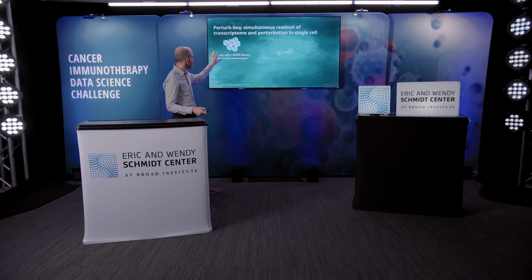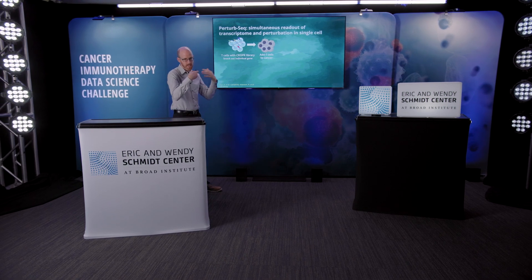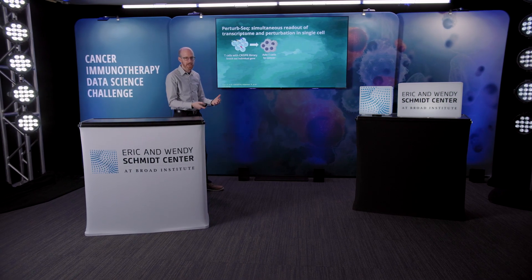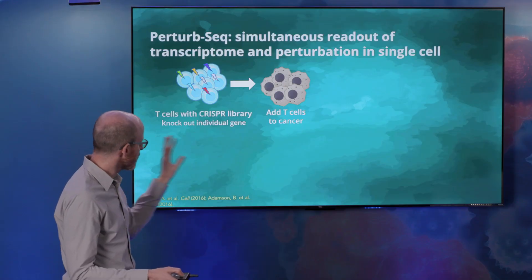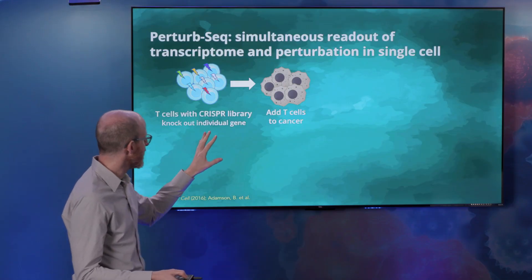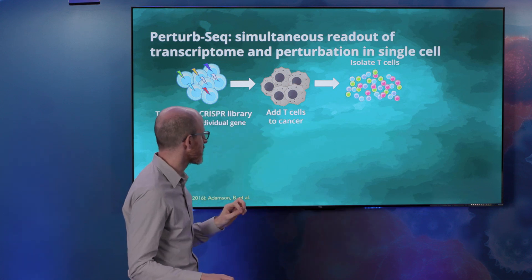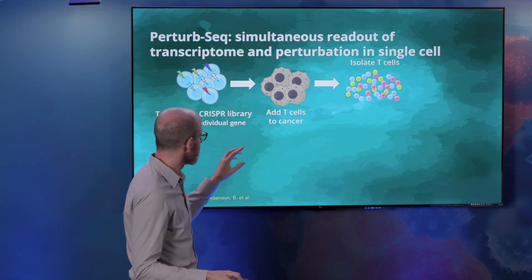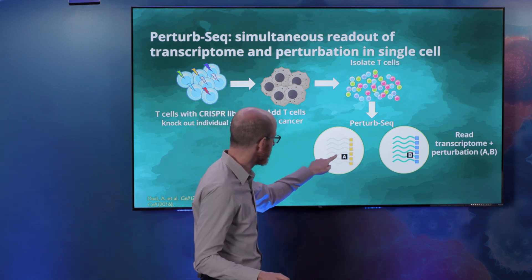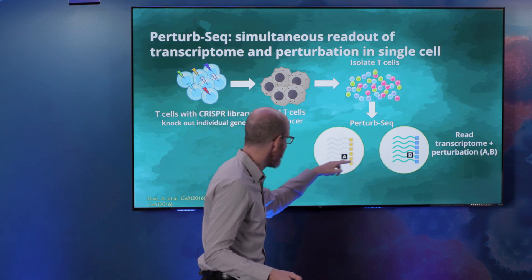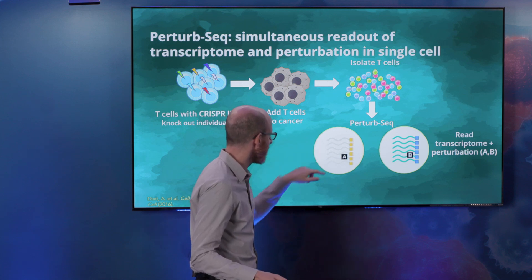Now we've genetically edited these T cells, we can introduce them into cancer, and the T cells will get activated in the cancer environment and eventually they'll become exhausted. After some time, we can isolate the T cells from the cancer and carry out the PerturbSeq experiment. PerturbSeq will allow us to read out for every individual T cell both the perturbation it received — A or B — as well as the gene expression within that single cell.